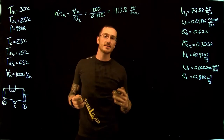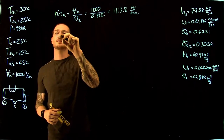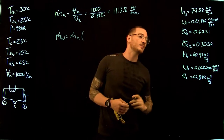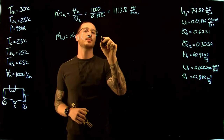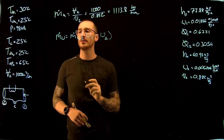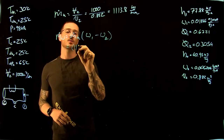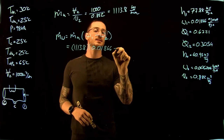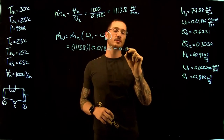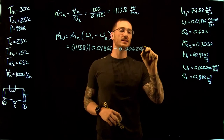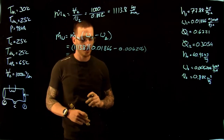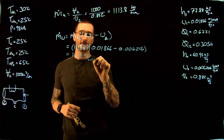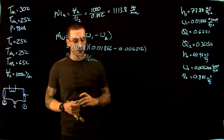To solve for the mass flow rate of condensates, we use: mass flow rate of condensate equals the mass flow rate of air times the change in specific humidity — that is, specific humidity at point 1 minus specific humidity at point 2. This gives us 1113.8 × (0.01866 − 0.006206), resulting in a mass flow rate of condensate of 14.12 kg/min.